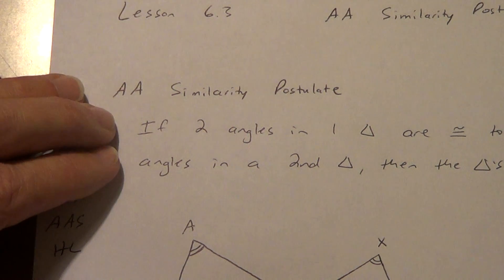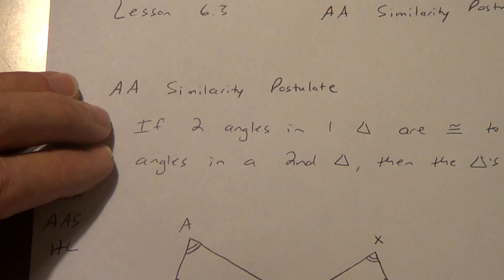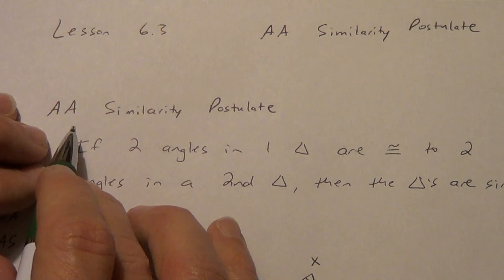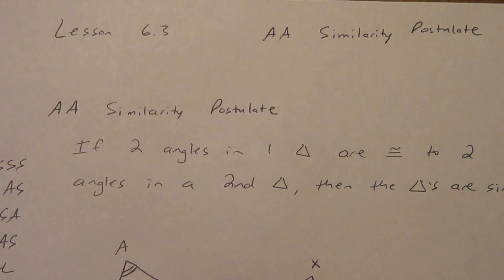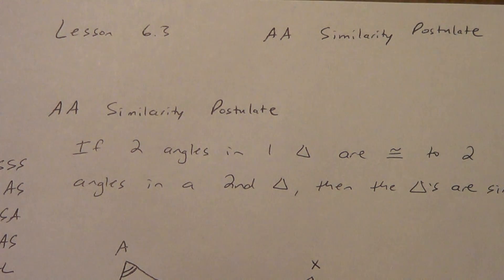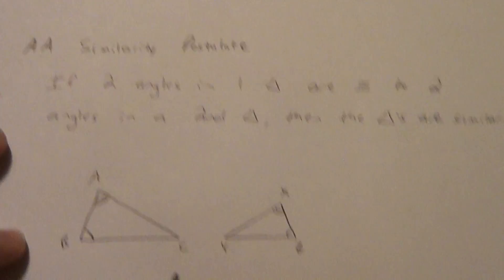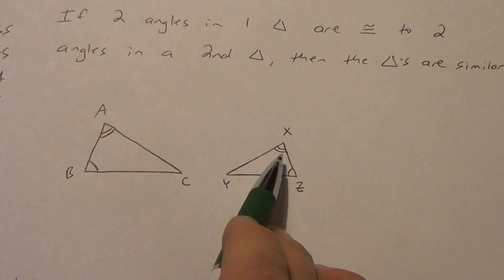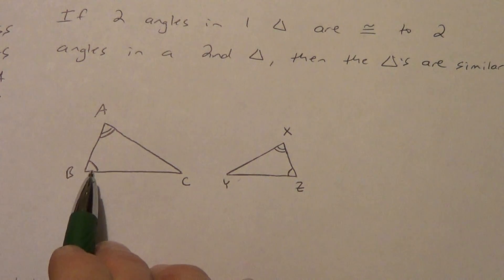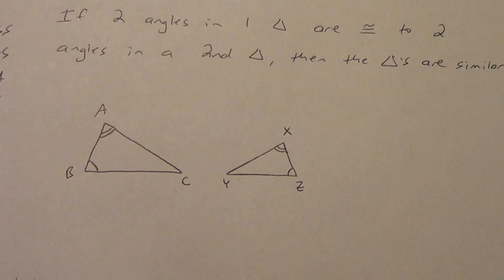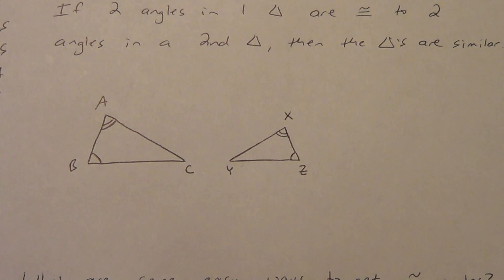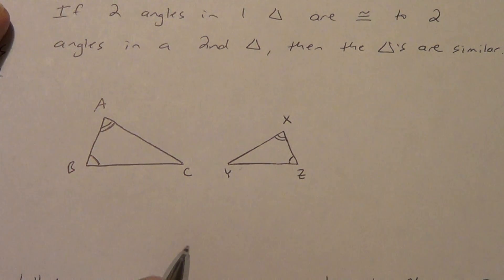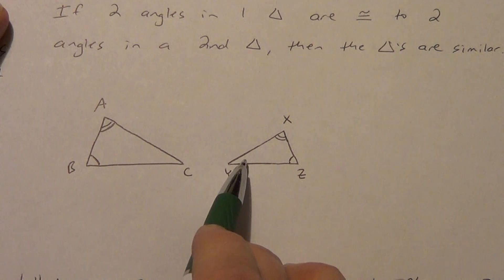So this is where angle-angle-angle does work, but we technically don't even need the third angle. The reason we don't need the third angle is because of the third angle theorem — if two angles are congruent in one triangle to two angles in another, then automatically the third angle is congruent anyway. So all I need is two. So if I've got two triangles with two sets of congruent angles marked, we can say these triangles are similar.